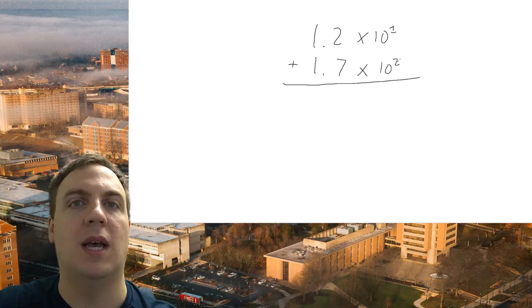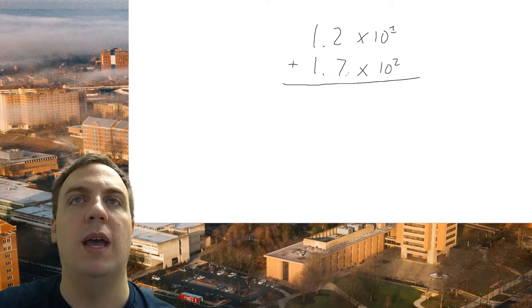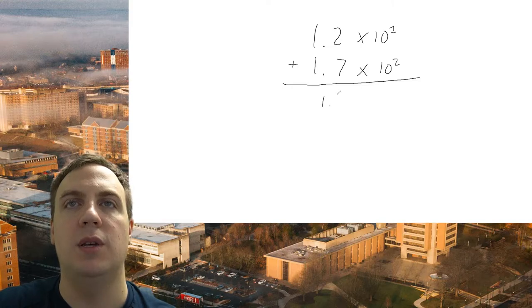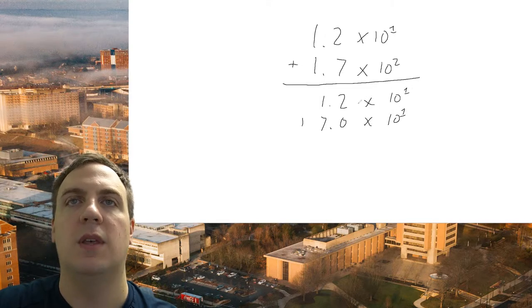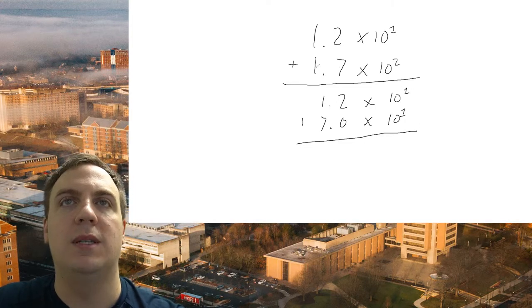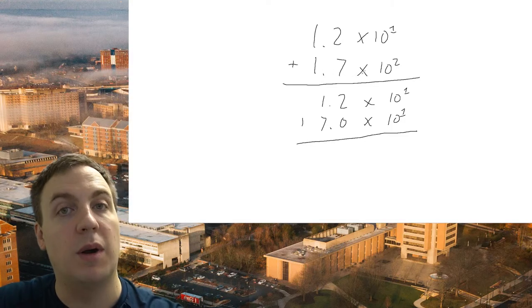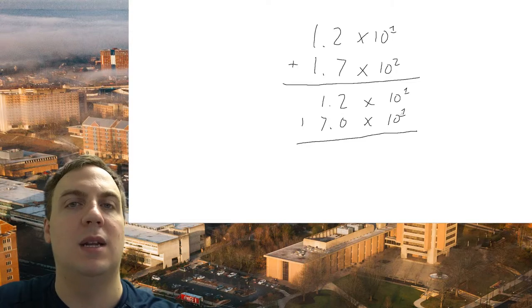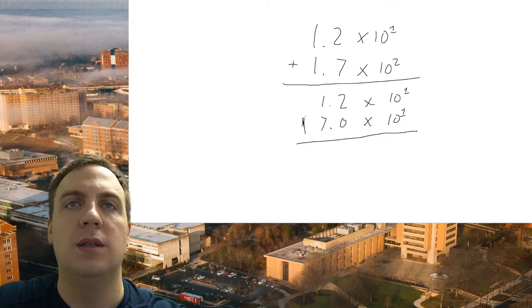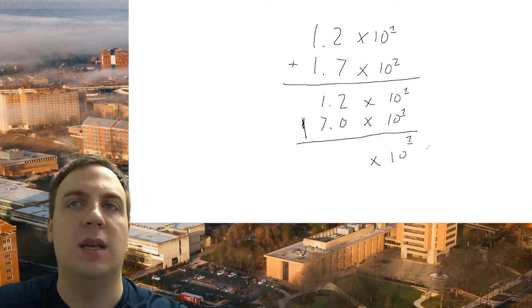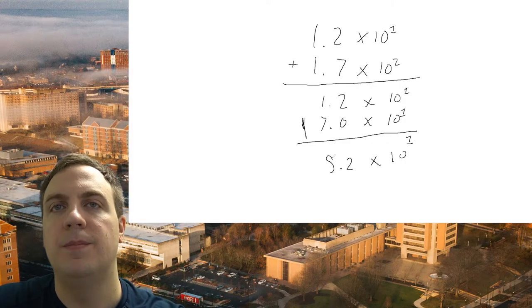We can go to 10 to the first or 10 to the second, as long as they match. To convert 1.7×10² to 10 to the first, we get 17.0 times 10 to the first. To double-check: 1.7 times 10 squared equals 170, and 17.0 times 10 to the first also equals 170. So now we line up the decimal point, take down the matching exponent, and add.